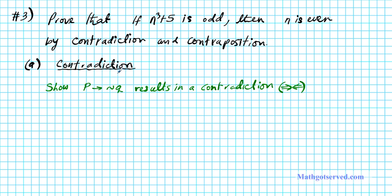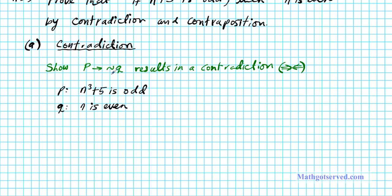In this problem, the hypothesis p is: n to the third plus five is odd. And then q, our conclusion, is: n is even. So what we want to do is show that p implies not-q results in a contradiction. If q is 'n is even,' then not-q is 'n is not even,' which is the same as saying n is odd. So not-q is going to be: n is odd.